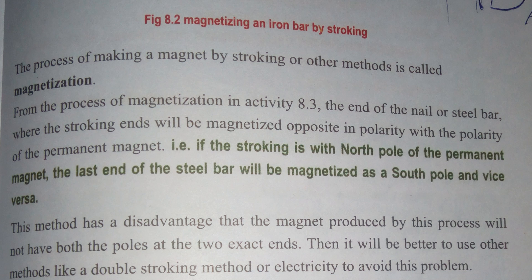That means if the stroking is done with the north pole of the permanent magnet, the last end of the steel bar will be magnetized as a south pole, and vice versa.